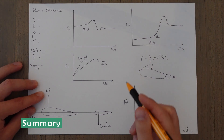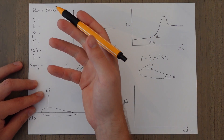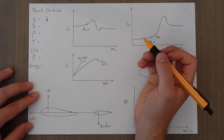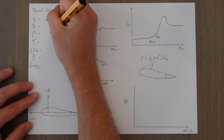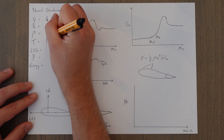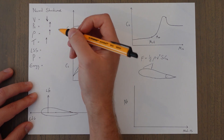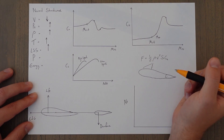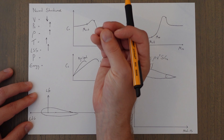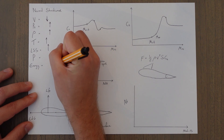To summarize: the normal shock wave moves rearwards as we accelerate through the critical Mach number. It causes a decrease in velocity, an increase in static pressure and density, and an increase in temperature because the pressure energy is quickly converted into temperature. Because of the increase in temperature, the local speed of sound also increases. That conversion of pressure to heat energy causes a decrease in total pressure and a decrease in total energy.